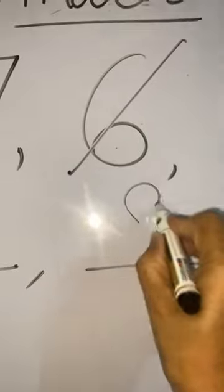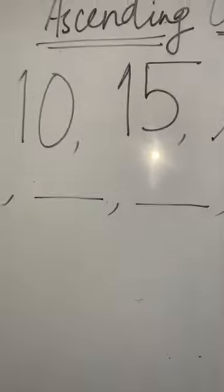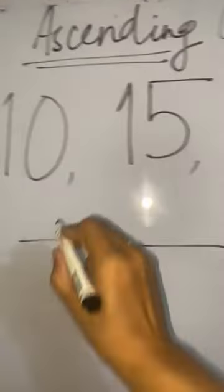Eight. Now the smallest number is 8. So 8 ko bi cross kar denge. Next number? Next number is? 10.